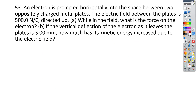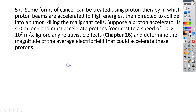The next problem is number 57. Some forms of cancer can be treated using proton therapy — proton beams are accelerated to really high energies and collide with a tumor, killing the malignant cells. A proton accelerator is about 4 meters long and accelerates protons from rest to a speed of 1 times 10 to the 7th meters per second. We're going to ignore anything dealing with relativity, covered in Chapter 26.